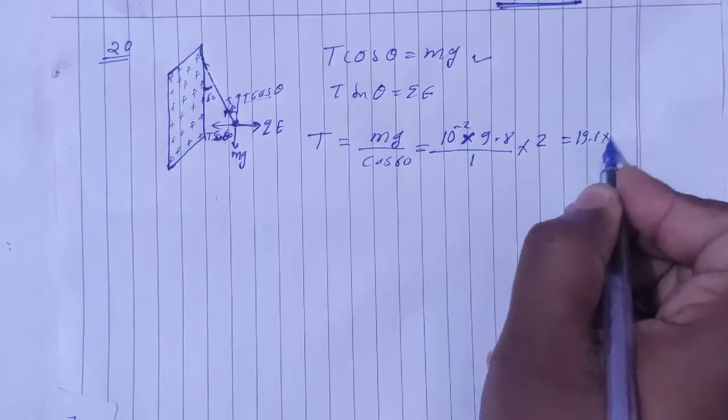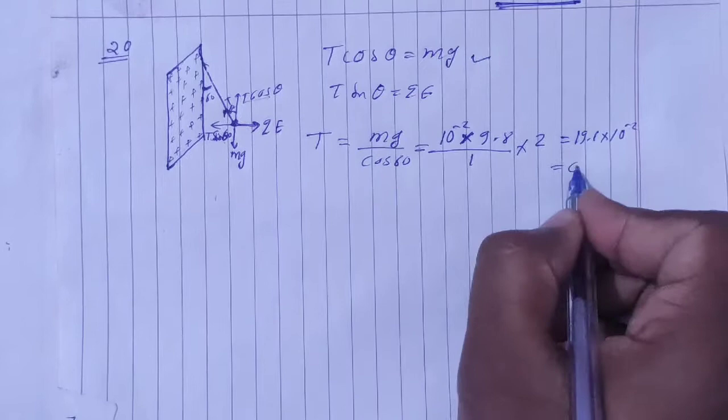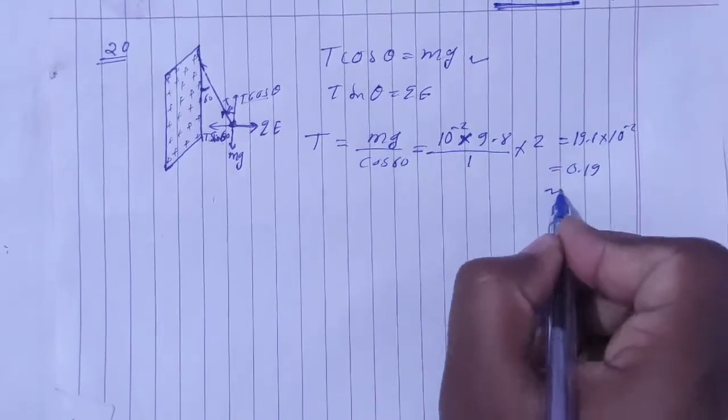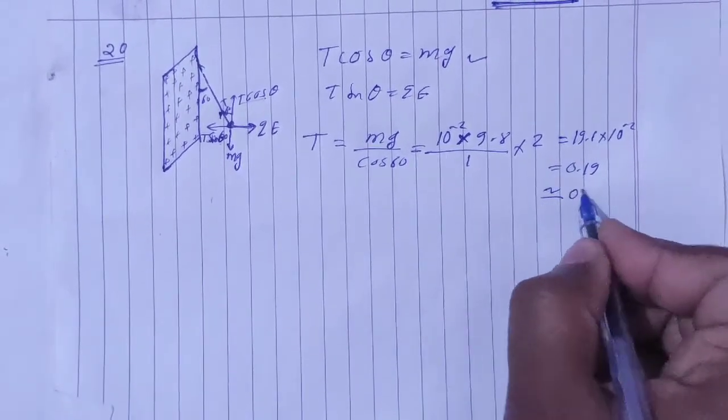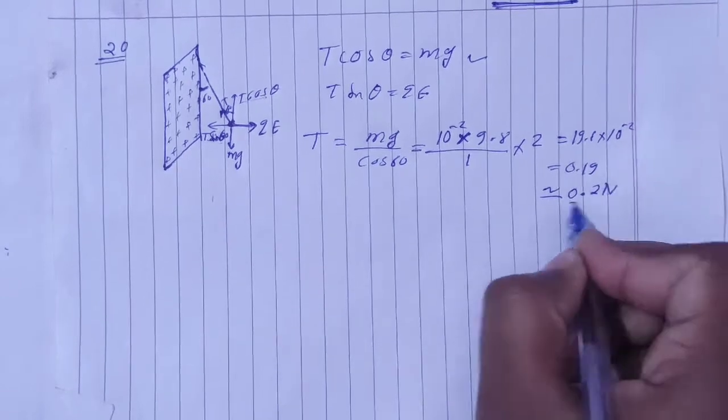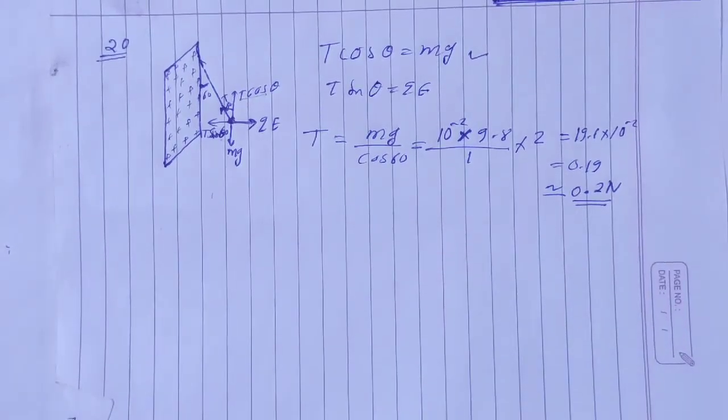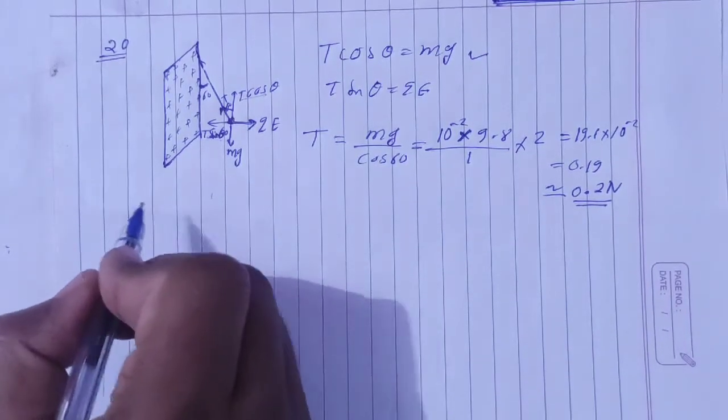Solving this, we get 19.6 into 10 to power minus 2. This is 0.19. If G is 10, then 0.2. So 0.2 Newton. Thread tension is 0.2 Newton. This is the first part of the answer.